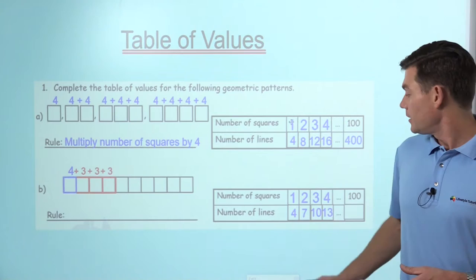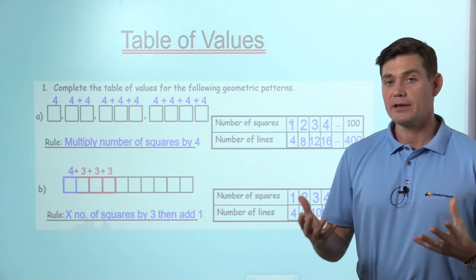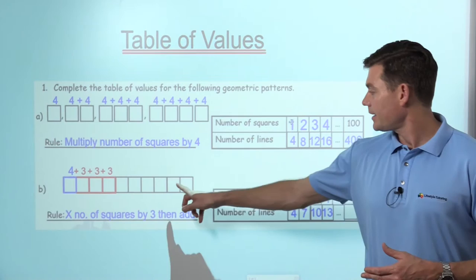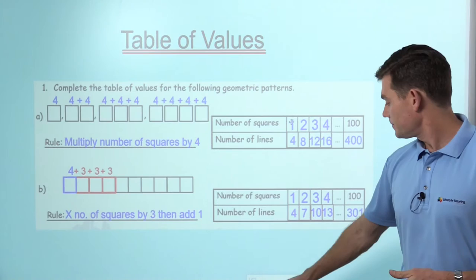So you can see the pattern that is happening in this geometric pattern to get to the number of lines. I'm going to multiply by three and then add one because this is my one extra line to begin with. So my rule is going to be multiply the squares by three and then add one. Let's test that rule. So if I have a hundred, I would simply multiply it by three and then add one, which should give me 301.